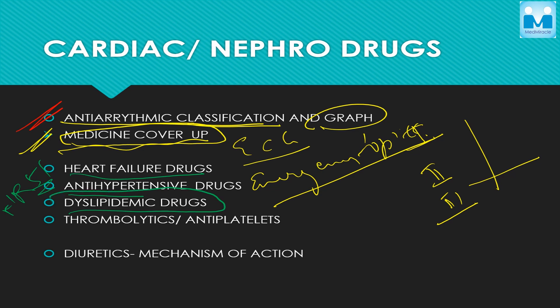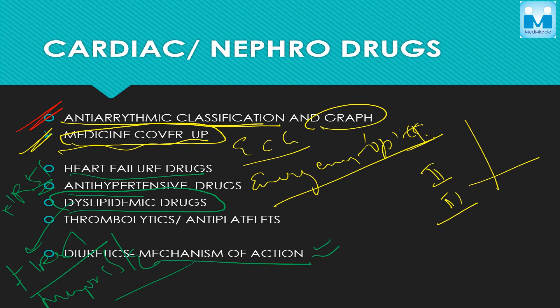Other drugs usually asked include heart failure drugs and antihypertensives — knowing the first-line agents is sufficient. For dyslipidemia drugs, you have to know in detail which drug is used for which type of dyslipidemia, the first-line agents for various dyslipidemias, and the major side effects. Then there are diuretics — mechanism of action is very important here, whether the drug acts at the PCT, DCT, or collecting duct, and how they act.